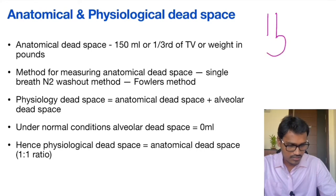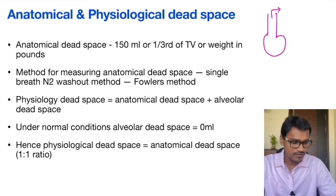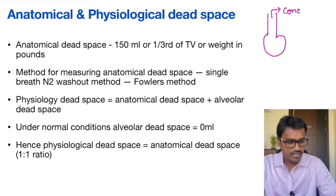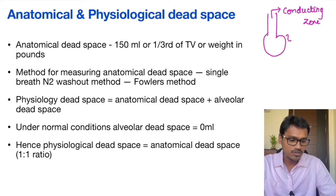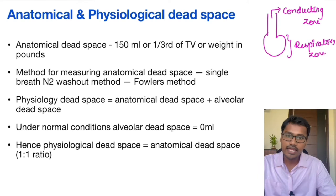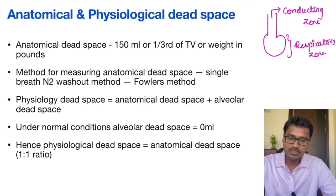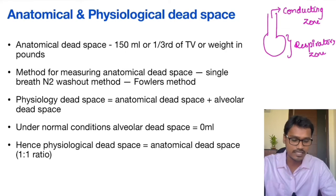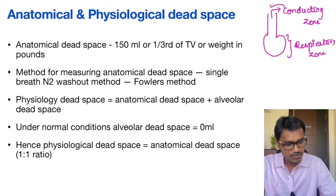This is a simplistic diagram of the alveolar pathway. The upper zone, which in functional anatomy of the respiratory system is called the conducting zone, and the lower zone is called the respiratory zone. There is no gaseous exchange in the conducting zone under normal conditions — in the conducting zone, no gas exchange.